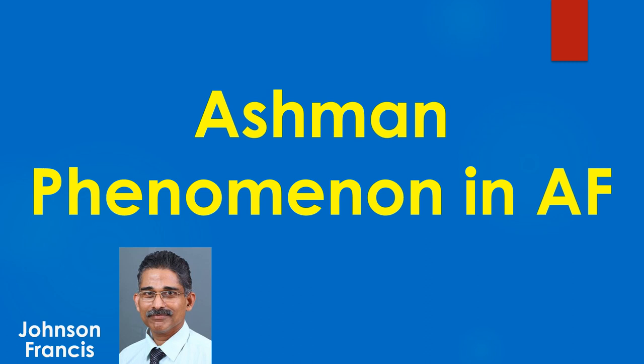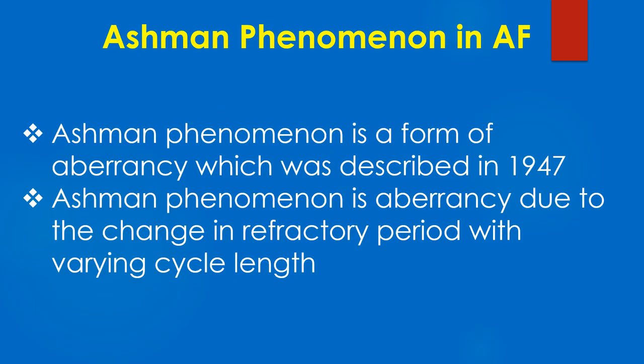Discussion on Ashman phenomenon in atrial fibrillation. Ashman phenomenon is a form of aberrancy which was described in 1947. It is aberrancy due to the change in refractory period with varying cycle length.